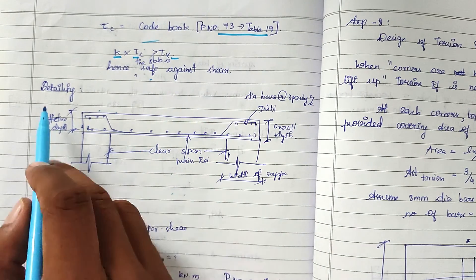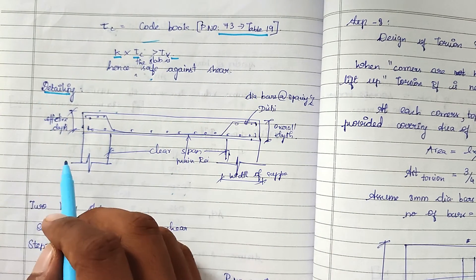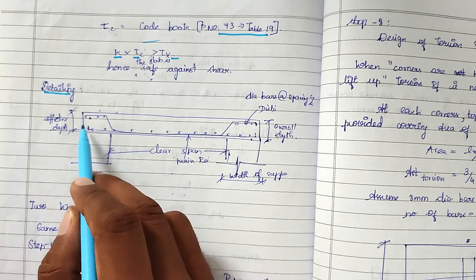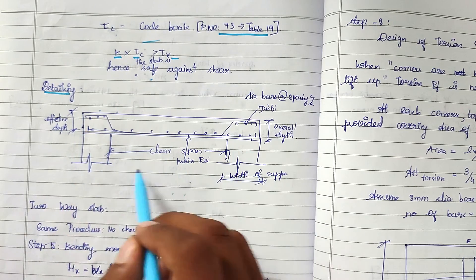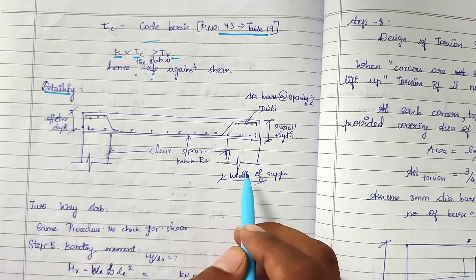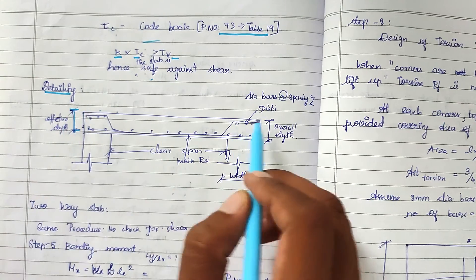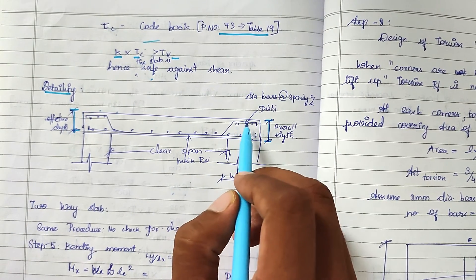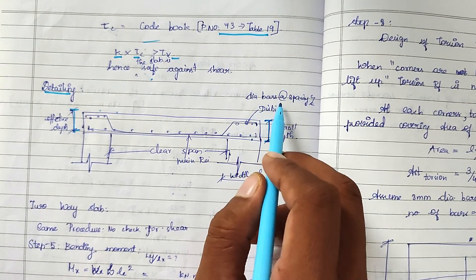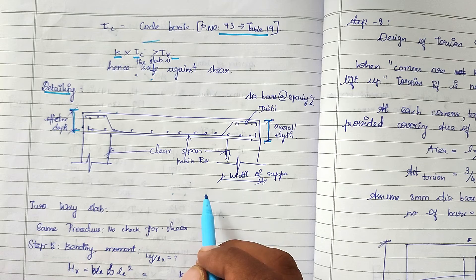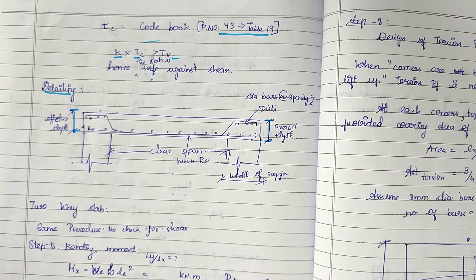Finally, we do the reinforcement detailing. The diagram shows the slab with the clear span, effective span, effective depth, and overall depth. We provide the main bars at the calculated spacing and the distribution reinforcement as well. This completes the design procedure for a one-way slab. We will see more in the next video — thank you.